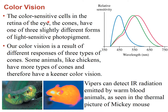We have cells that detect light — specifically three types of cone cells with sensitivity for different wavelengths: one detects more red, one detects more green, and one detects more blue. Not all animals have the same types of cones; for instance, some snakes such as the viper can detect infrared radiation and can see us at night because of our own emission — perceiving a heat source like Mickey Mouse as a glowing orange shape.